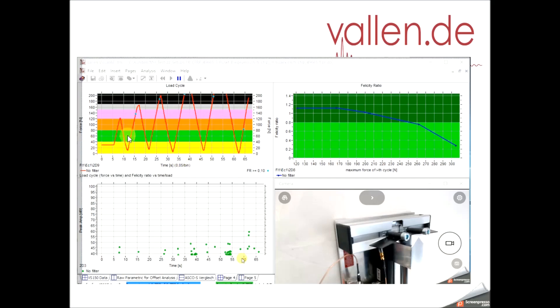Load is drawn as a red line. Second, peak amplitudes versus time are shown. Third, Felicity Ratio related to the maximum force of each load cycle is shown. Light or dark green indicates if the structure is damaged or not.